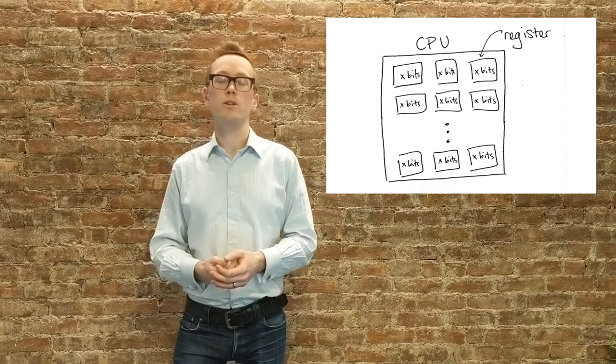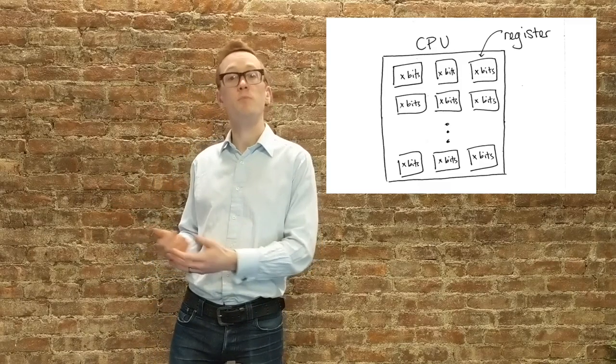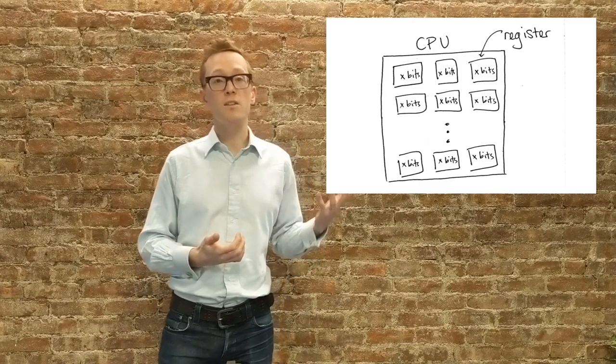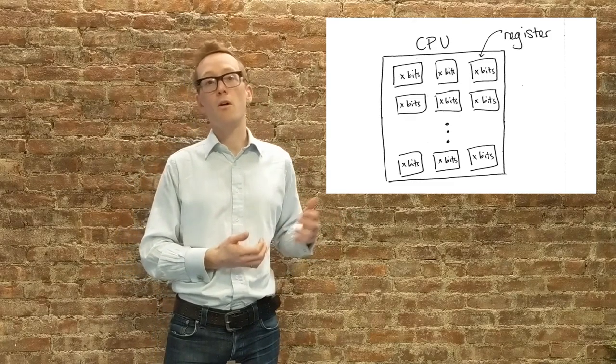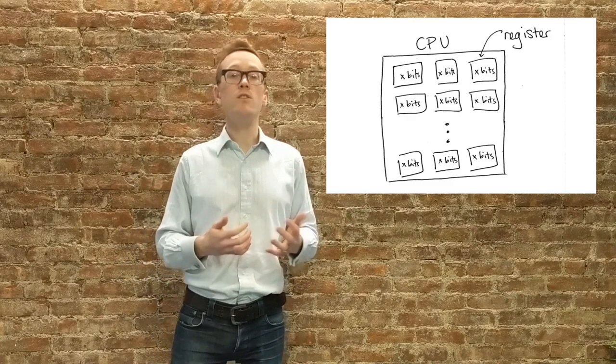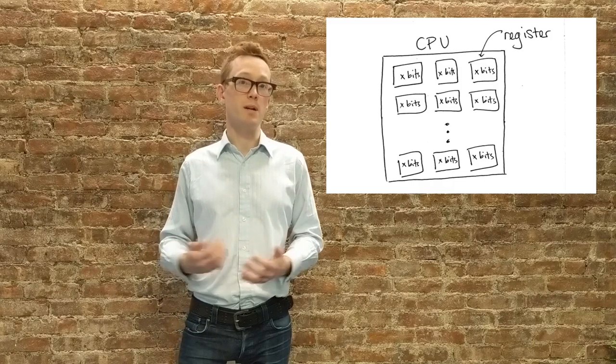Each CPU has a fixed number of registers, each of which contains a fixed number of bits. For example, on an Intel x86-64 CPU there are 16 general-purpose registers, each of which stores 64 bits or 8 bytes of data.